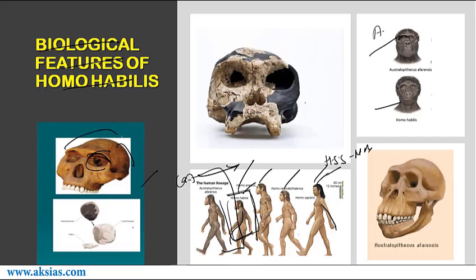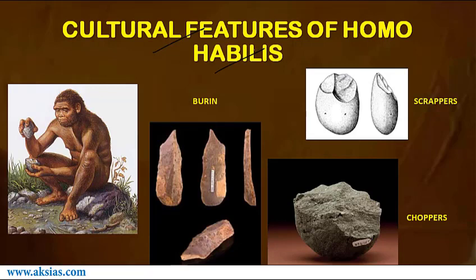The brain case of Homo habilis is rounded, and the top of the skull was more rounded with lesser crest than that of Australopithecus. The teeth in general show human affinity, particularly the premolars which have two ridges like humans. The size of the teeth varies and the dental arch was more parabolic compared to Australopithecus. The hand-limb morphology is clearly like that of modern man.